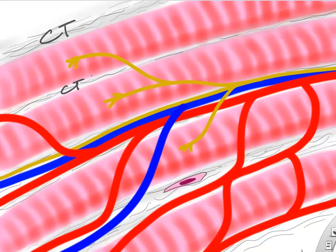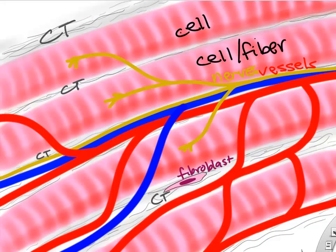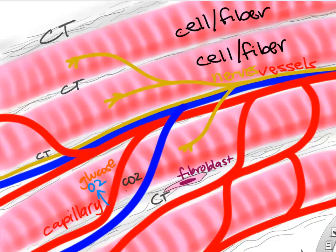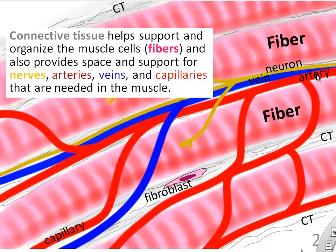Zooming in, there's connective tissue supporting our muscle fibers, with fibroblasts to build it, blood vessels, and nerves. The blood vessels nourish those very active muscle cells, which need oxygen, glucose, and nutrients, and produce CO2 that needs to be taken away. So we have arteries, veins, and capillaries running through the connective tissue of our muscle.